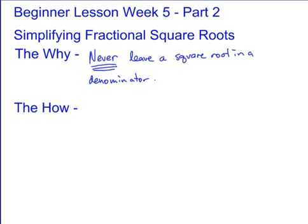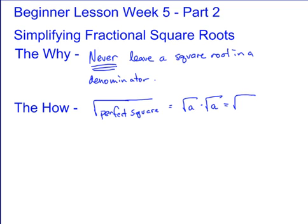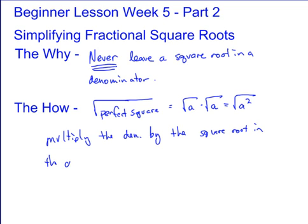If you need to get rid of a square root, the only way to do it is to take the square root of a perfect square. If you've got the square root of a, the way to make it a perfect square is to multiply by the square root of a, because that gives you the square root of a squared. So we're going to multiply the denominator by the square root in the denominator. If you've got the square root of three in the denominator, you multiply the denominator by the square root of three, and then you must also multiply the numerator by the square root of three.